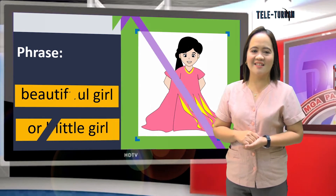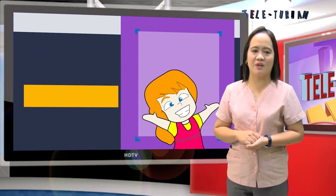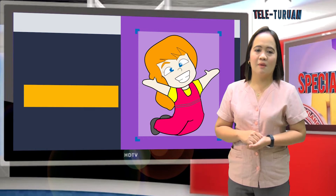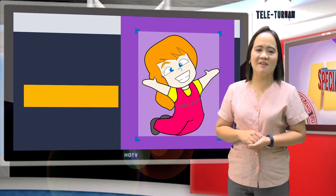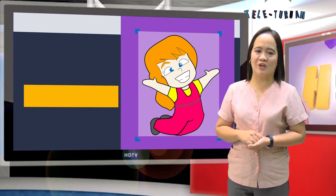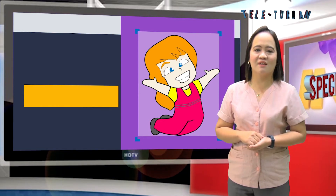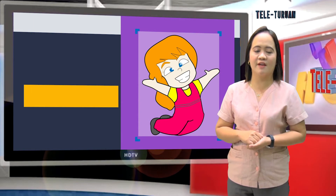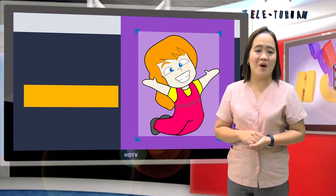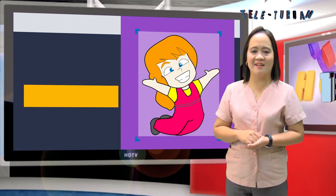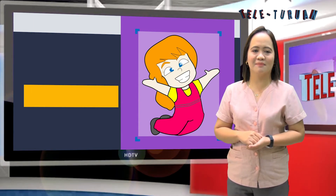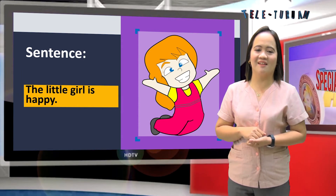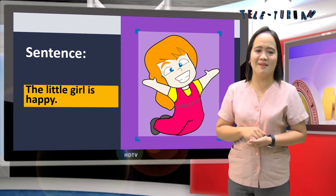Lastly, let us describe the illustration through a sentence. From the details given in the picture, we can see a girl jumping, having a big smile on her face. What is your answer, kids? Wonderful — the little girl is happy.